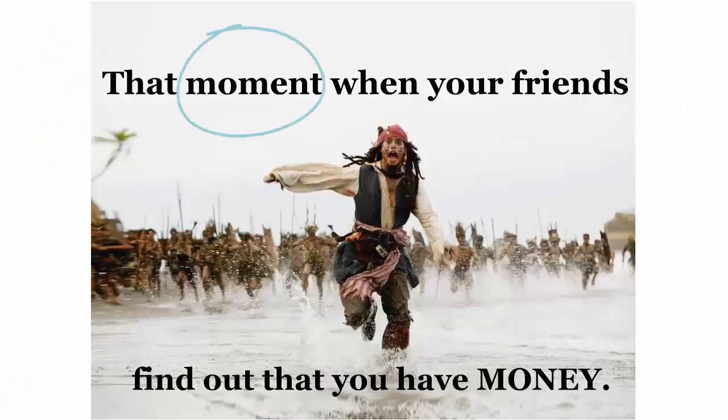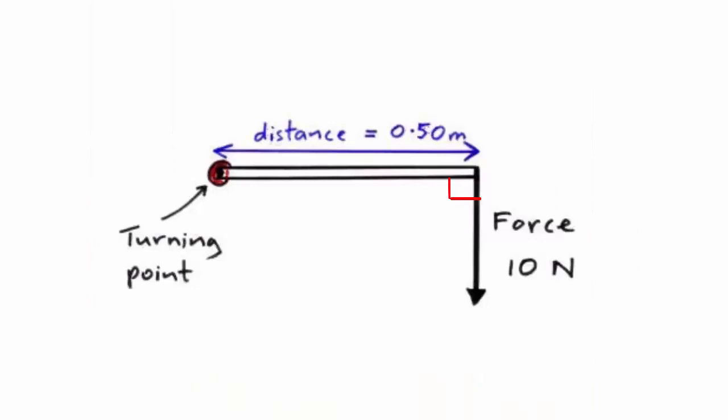The other viewers must not confuse with this moment. The moment we are talking about is a physics term. So what is moment? When a force is being applied on an object at a perpendicular distance from its pivot point, then the body will rotate or try to rotate with a factor which is equal to the product of force and the perpendicular distance.